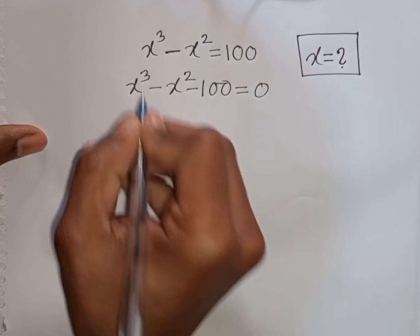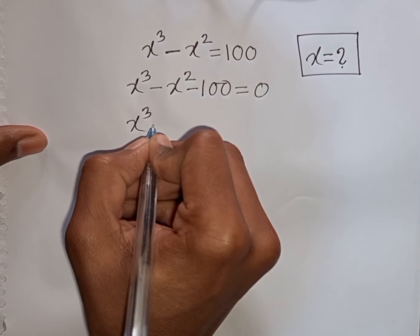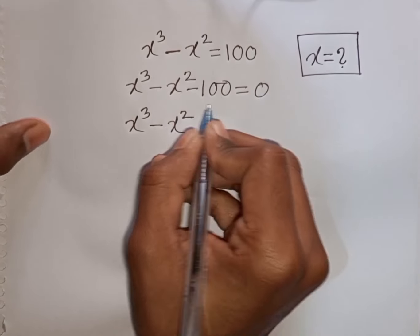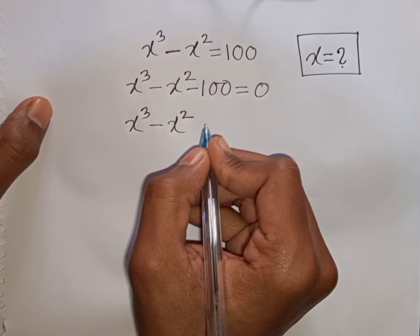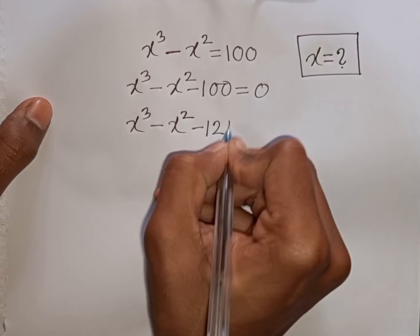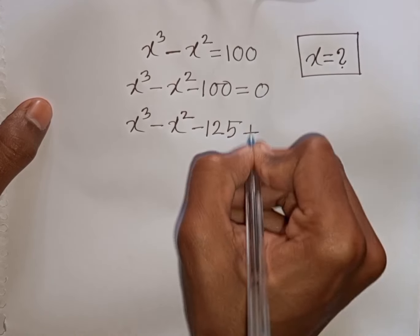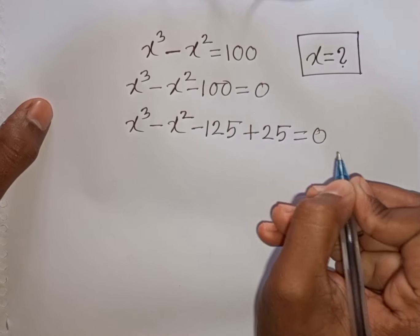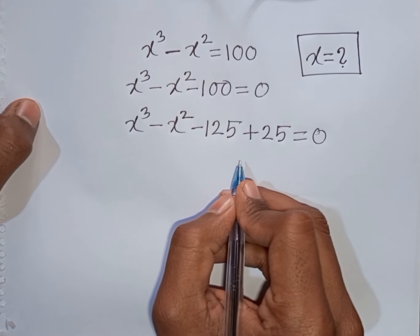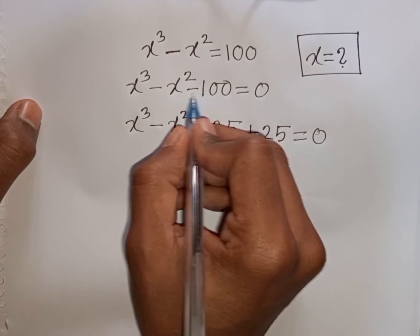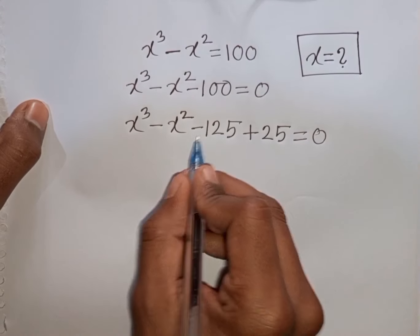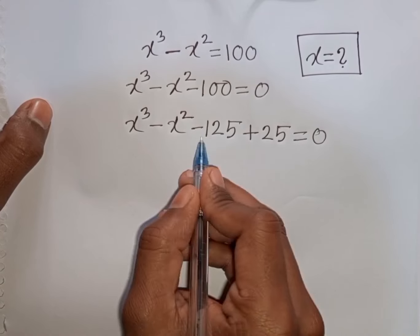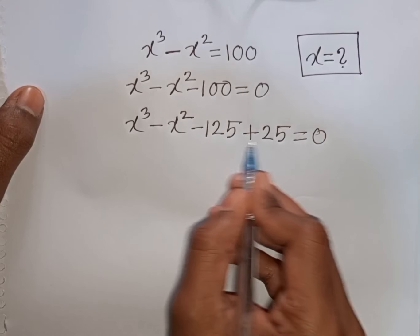Now we have x cubed minus x squared. Then minus 100 can be written as minus 125 plus 25, equal to 0. How to understand this? Pay attention here — the nearest cubic number of 100 is 125. So we can write minus 100 as minus 125 plus 25.